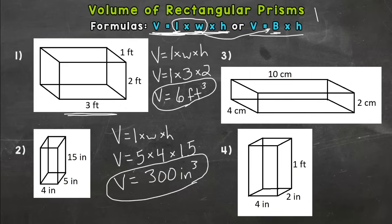All right, let's go to number three. Volume equals length times width times height. Plug in. Our length going back is four. Our width is 10. And our height is two centimeters.